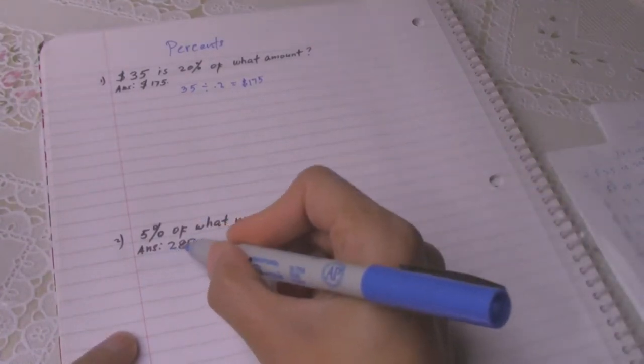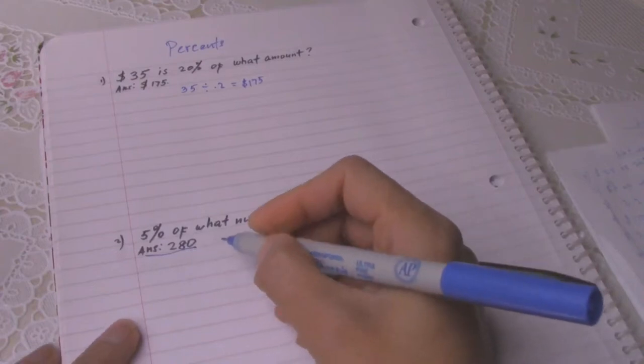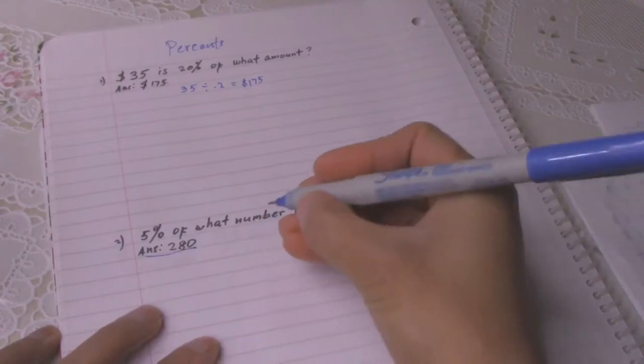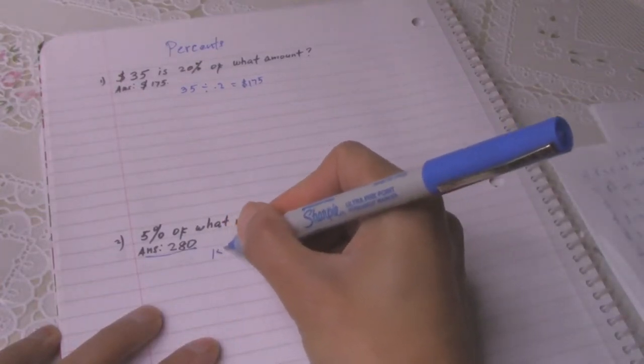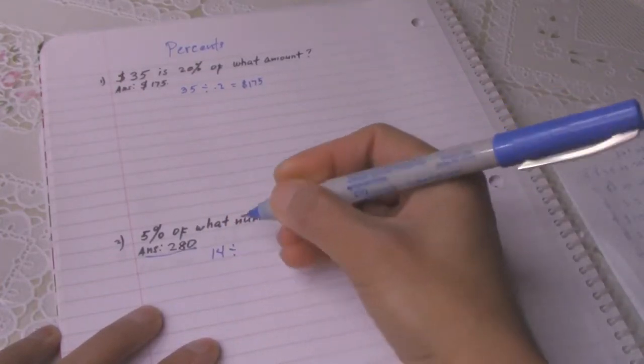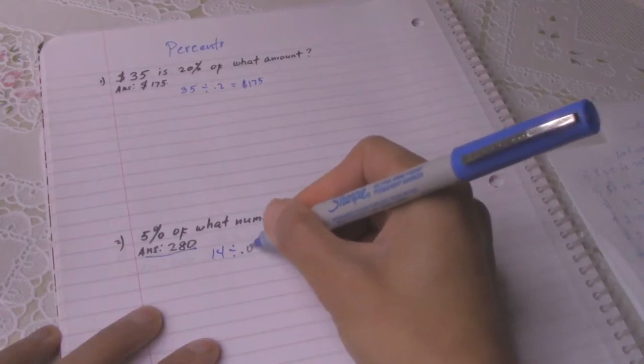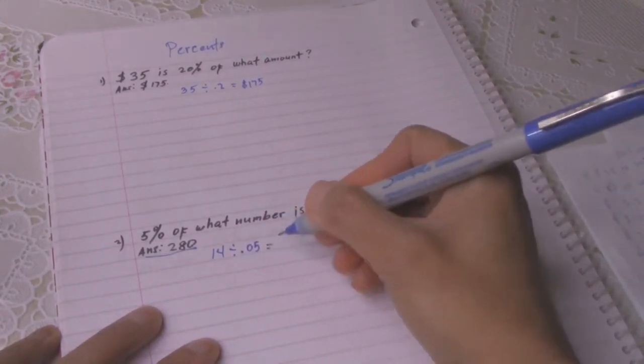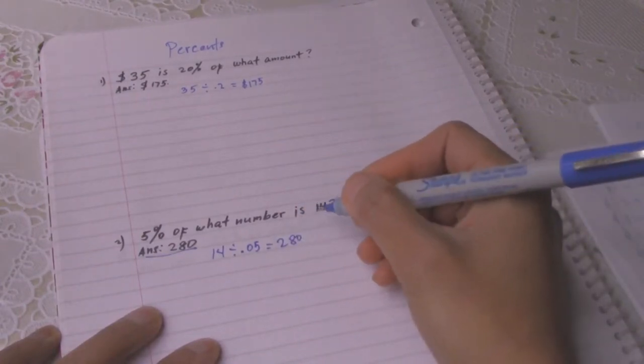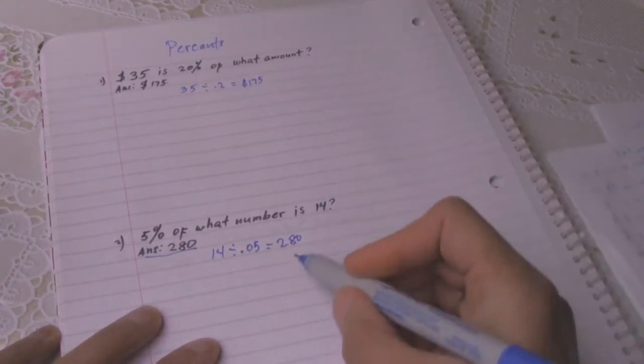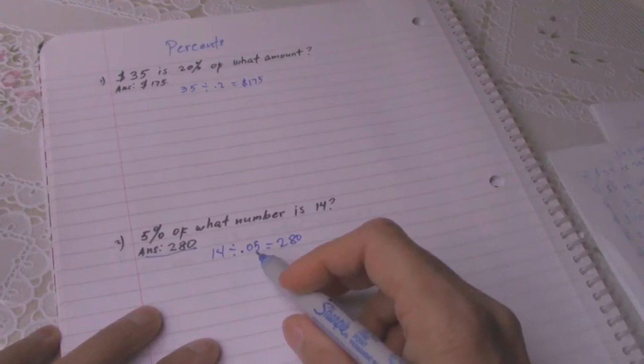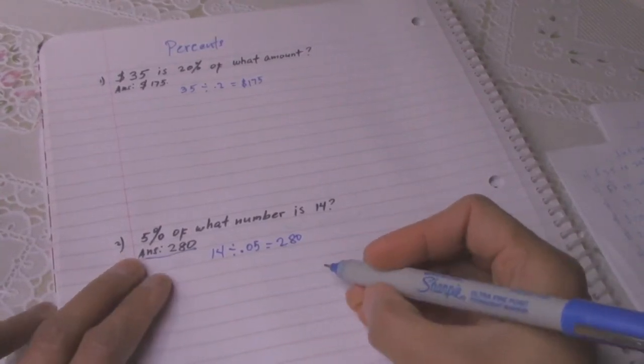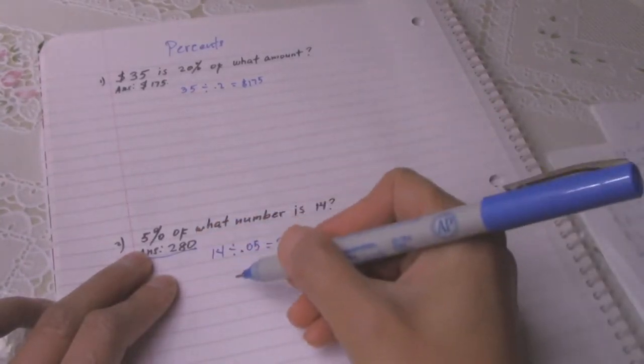5 percent of what number is 14? The answer is 280. How do you get 280? 14 divided by 0.05 equals 280.